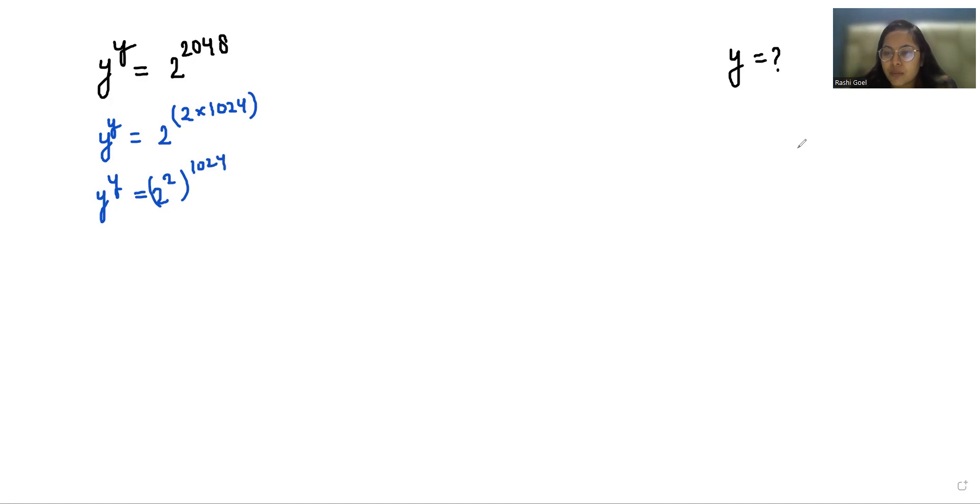According to the exponent rule, a^(m^n) can be written as a^(mn). So y^y equals 4^1024, and I can write 1024 as 2 times 512.